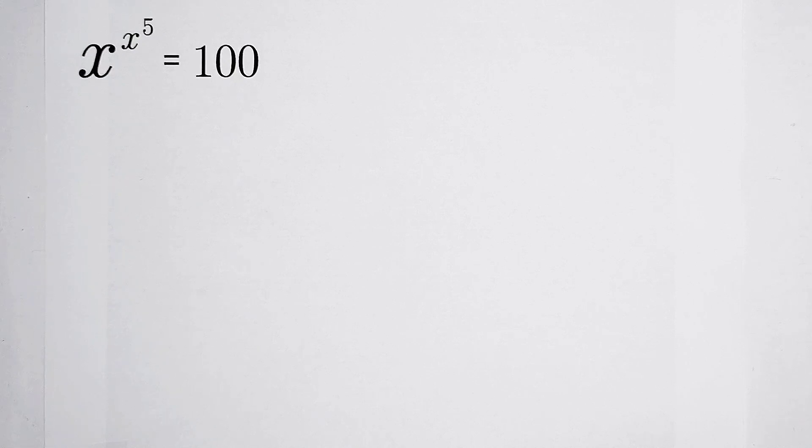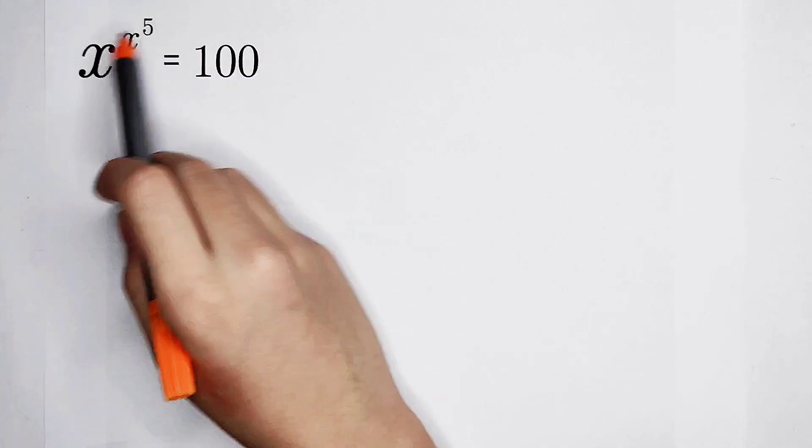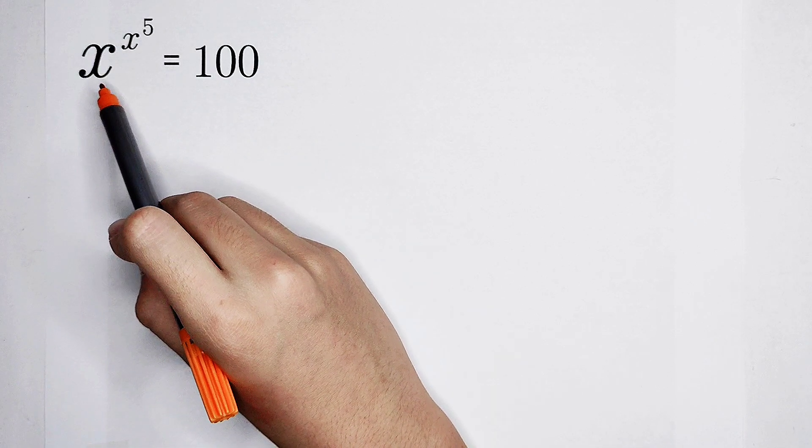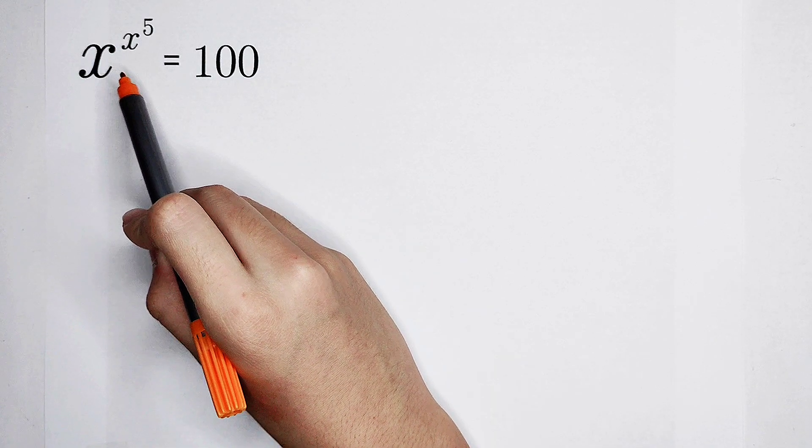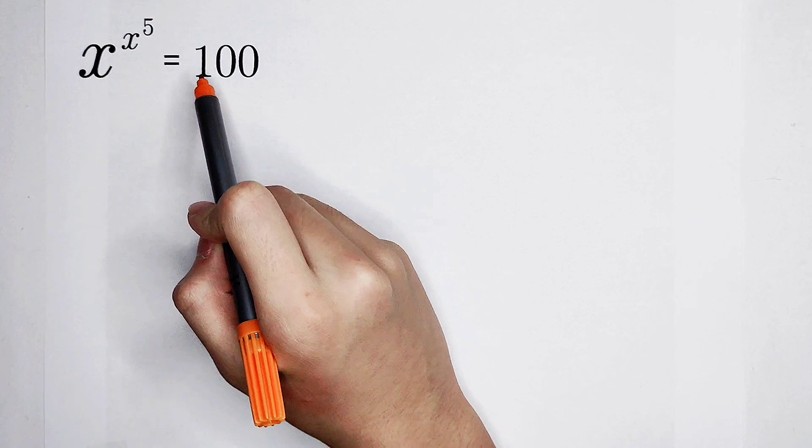Welcome back to Math We Know. Solve this equation: x to the power of x to the power of 5 is equal to 100. How should we solve it?